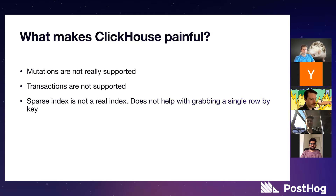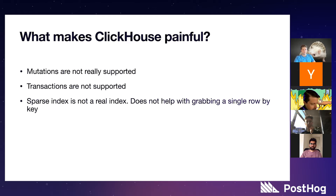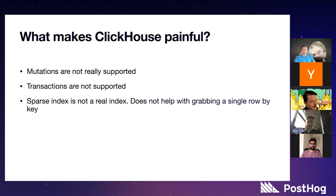What makes ClickHouse painful? Mutations are not supported as we know — we kind of abuse this. It does have it as a DDL ALTER TABLE statement, but it waits for parts to be merged before applying. If you have like a thousand mutations queued, those are stored independently of the actual data on disk for that table, and it reads the data and then reads the mutations for each query, which can slow things down big time. Transactions are not supported. The sparse index is not a real index — it does not help with grabbing a single row by key.